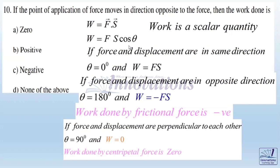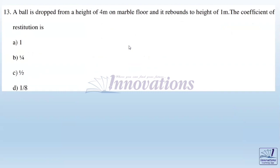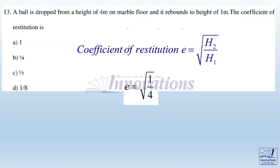Third problem: A ball is dropped from a height of 4 meters on marble floor and it rebounds to a height of 1 meter. Find the coefficient of restitution. The coefficient of restitution e equals square root of H₂ by H₁, final height divided by initial height. The ball rebounds to 1 meter after being dropped from 4 meters, so e equals square root of 1 by 4. The answer is e equals one by two.